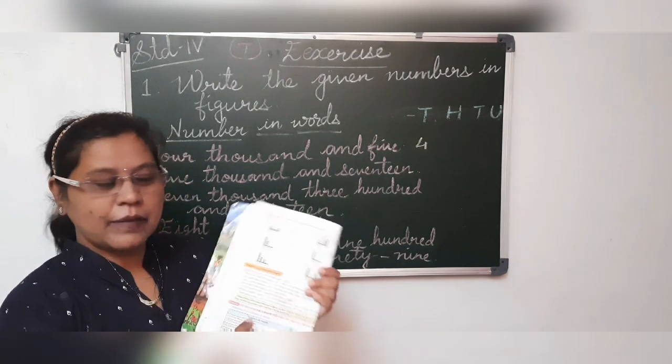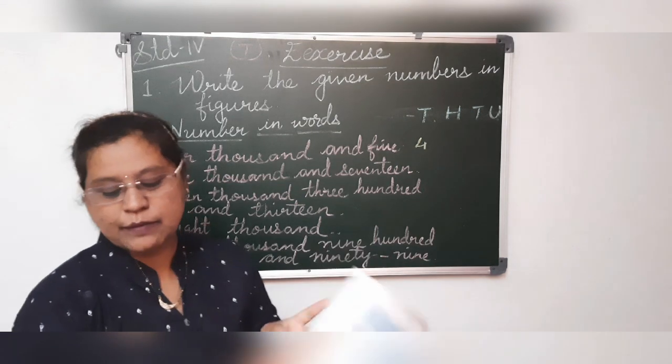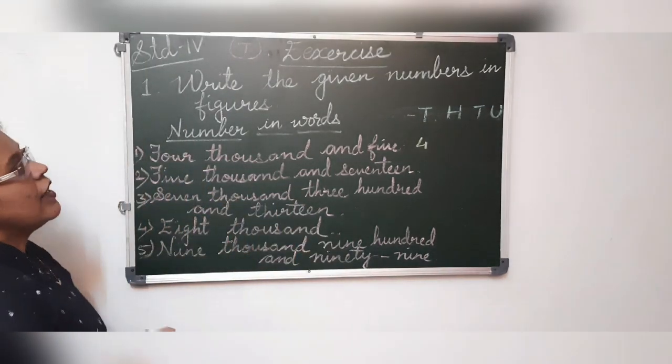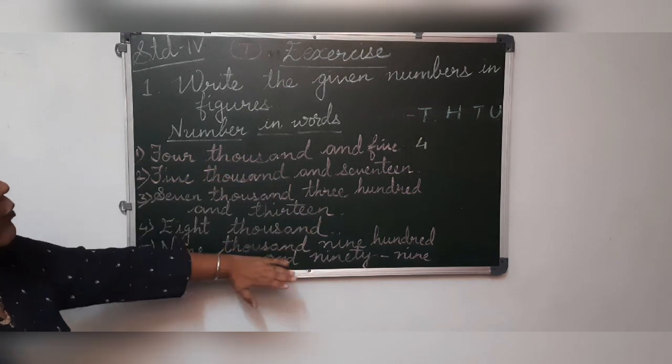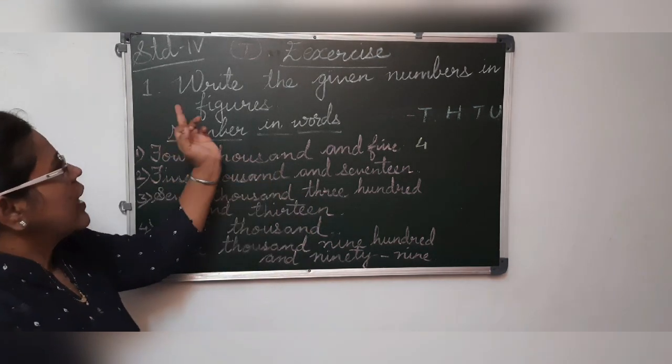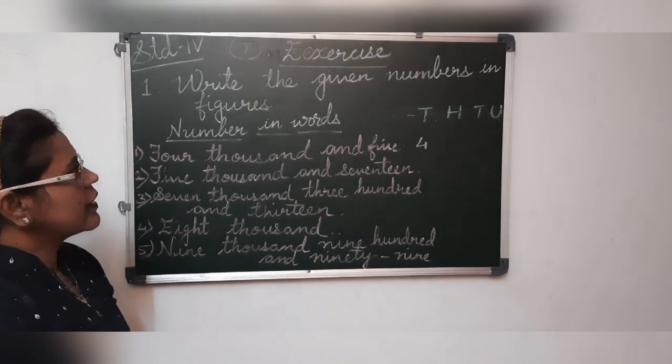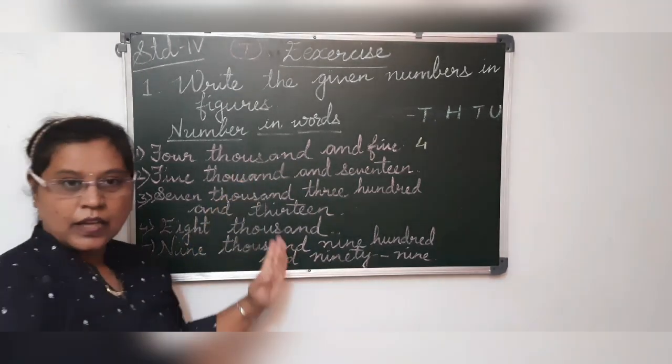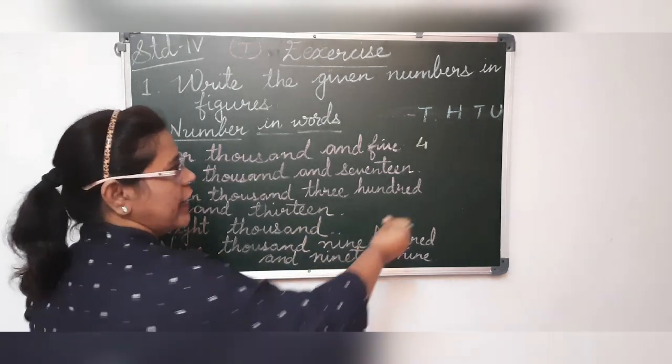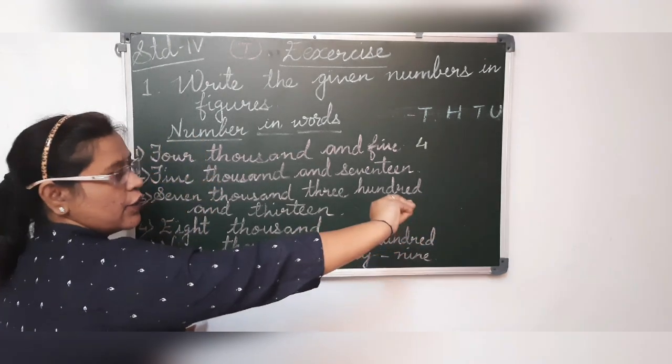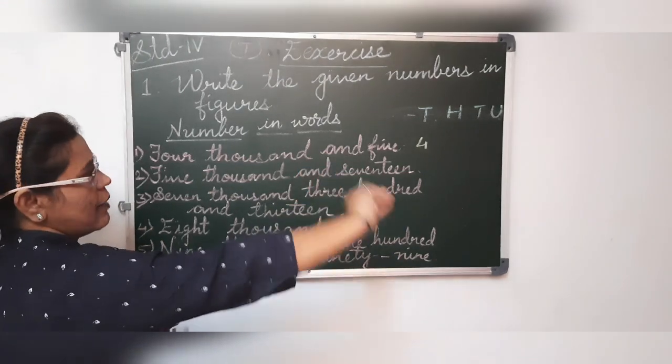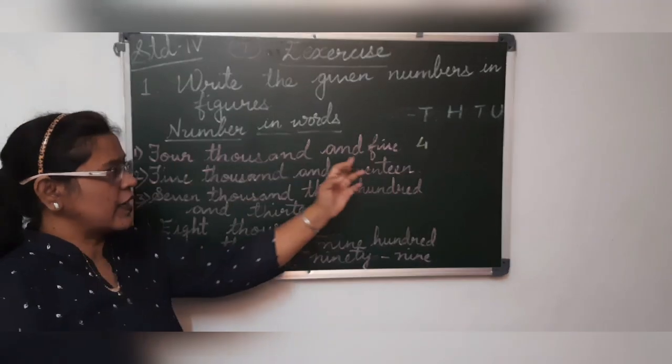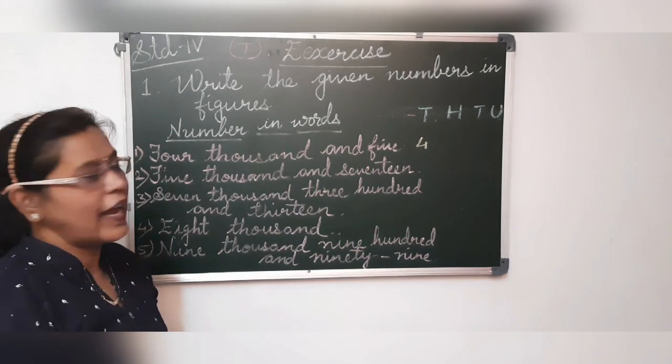So sum number 1, 2, 3, 4 and 5, these sums we are going to complete today in this session my dear friends. Already I have written the sum on the board. Write the given numbers in figures. Write the given numbers in figures means the numbers are given in words. You have to write down in numbers. Now here, first sum is 4,005.